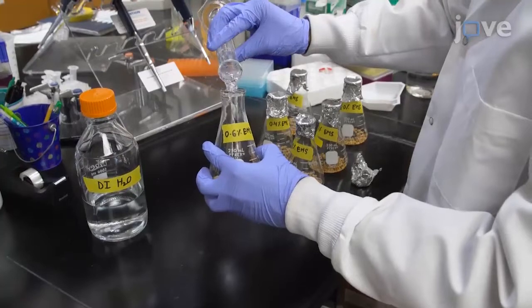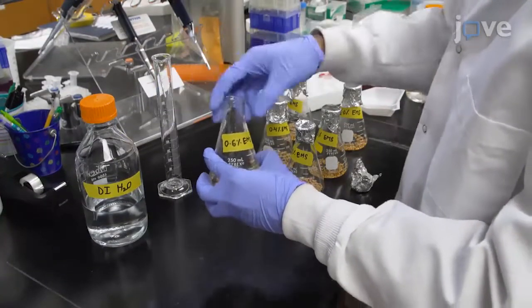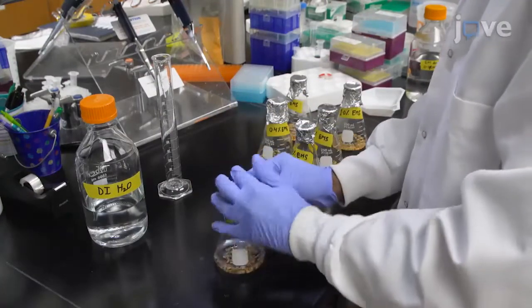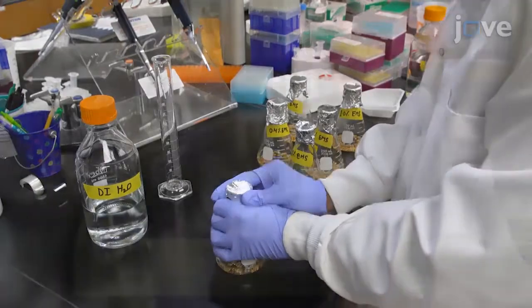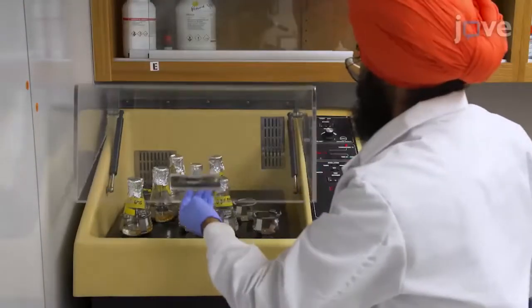To begin, soak 100 seeds with the genotype of interest in each of six 250-milliliter glass flasks containing 50 milliliters of distilled water. Shake at 100 rpm for 8 hours at room temperature for imbibition.